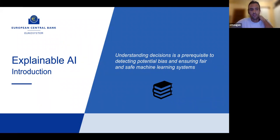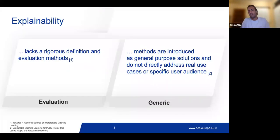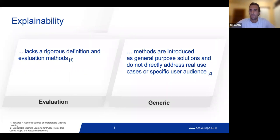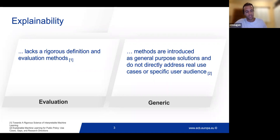Some authors have found the topic to have its own limitations. We have found two potential limitations. One is in evaluation — explainable AI lacks a rigorous definition and evaluation methods. How can we evaluate explainable AI? Is there common benchmarking? Do we have really good metrics to optimize? Second is that some of the methods introduced are really generic. We don't know how useful they are in use cases, and we don't know if they are created for a particular audience or just in general.